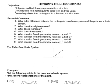Section 9.6: Polar Coordinates. When we learn about polar coordinates, it is a different way to represent where a point is in space. What we're used to doing is representing a coordinate as a rectangular coordinate, or using the rectangular coordinate system. In the rectangular coordinate system, we have an x-axis and a y-axis.